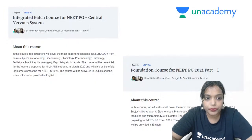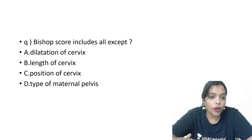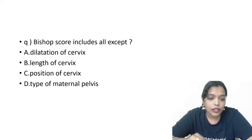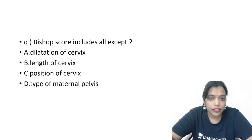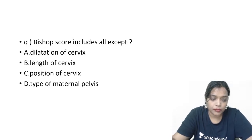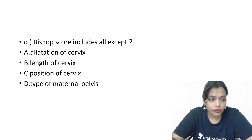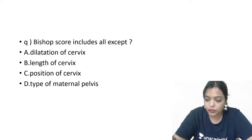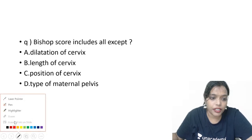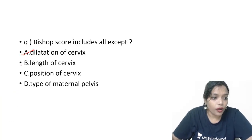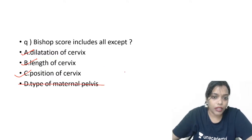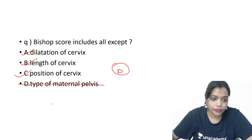So in the Bishop's Score, this was a question asked in AIIMS 2020 June session: Bishop's Score includes all except — dilatation of the cervix, length of the cervix, position of the cervix, type of maternal pelvis. The most appropriate answer is D — type of maternal pelvis — because Bishop's Score does not include the type of maternal pelvis.